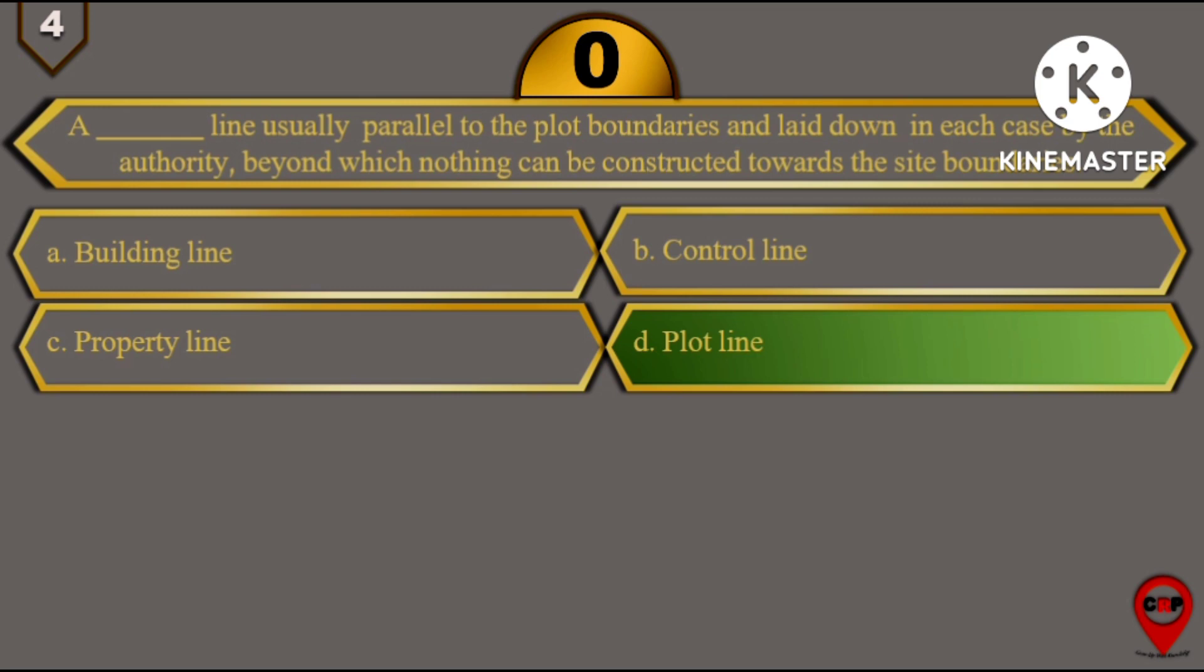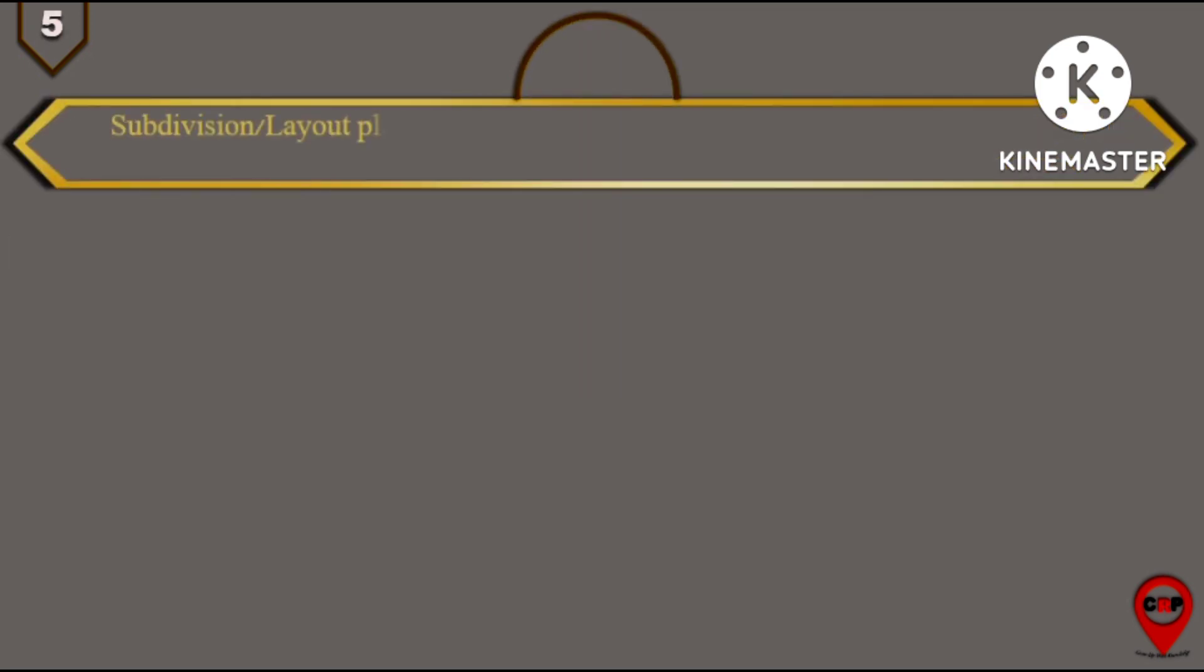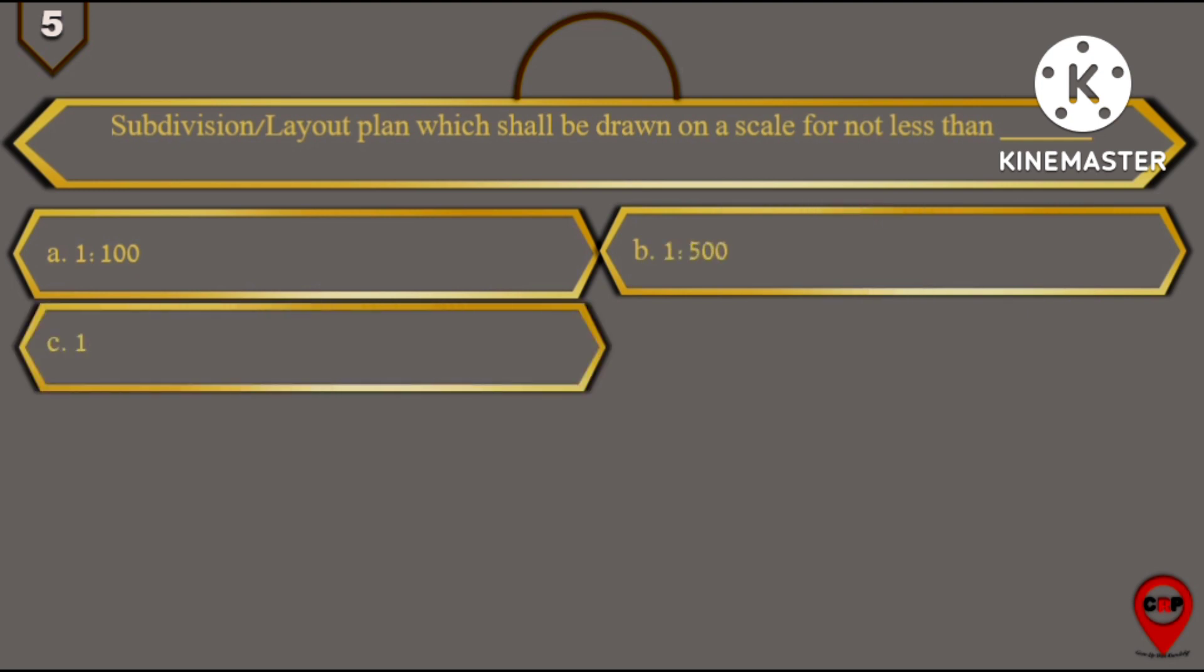Next question, question number 5: Subdivision layout plan which shall be drawn on a scale of not less than 100. Options are: 1 is to 200, 1 is to 500, 1 is to 1000, and option D is 1 is to 50.